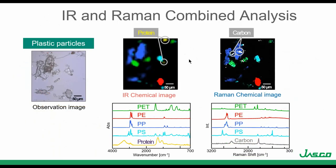This is an example of combined measurement of IR and Raman. In this sample we can see polymers, some proteins, and carbon is detected when Raman is used.